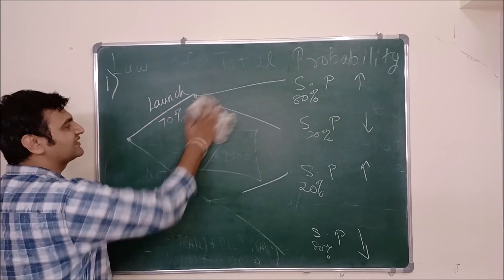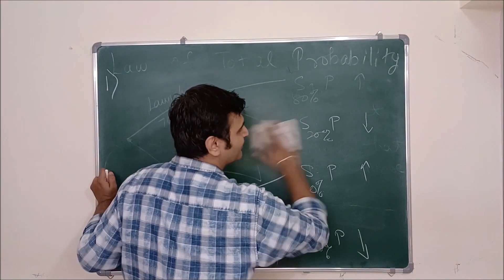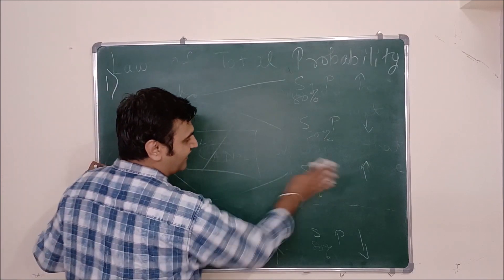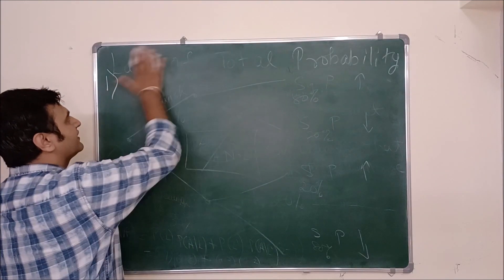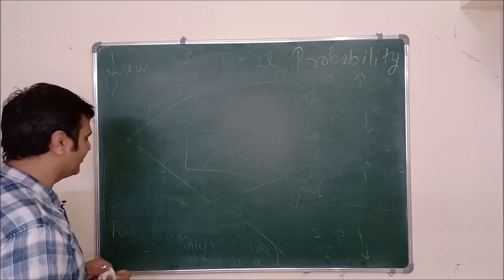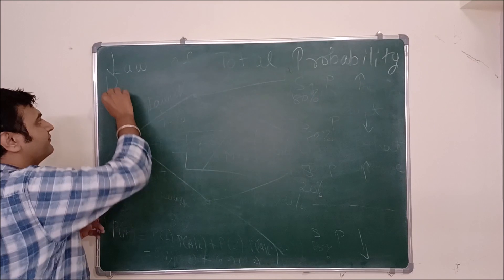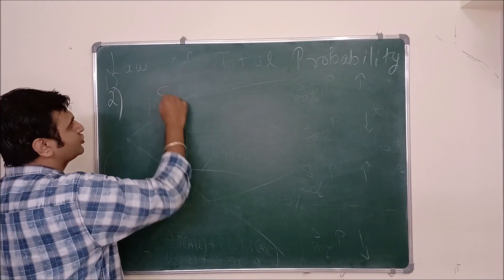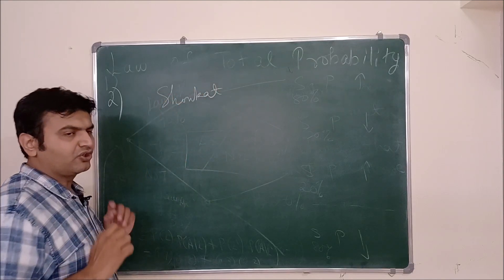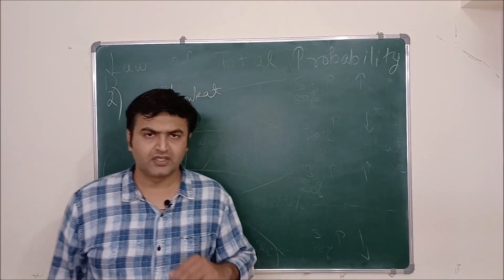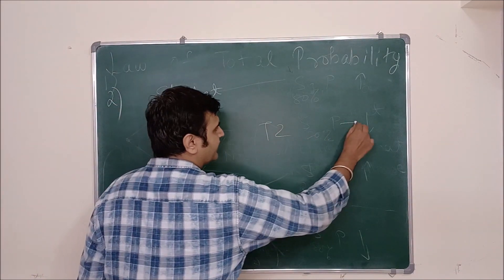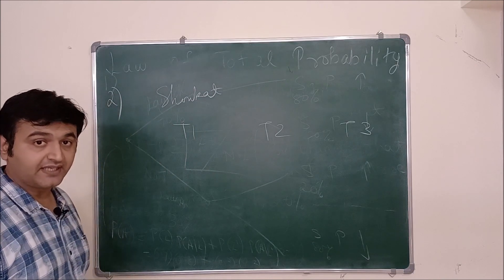As I mentioned in my last lecture, I'm using the names of students who comment in the comment section. So let's go to the second problem. Suppose Shokat got a job after his degree and he is leading three teams: Team 1, Team 2, and Team 3.